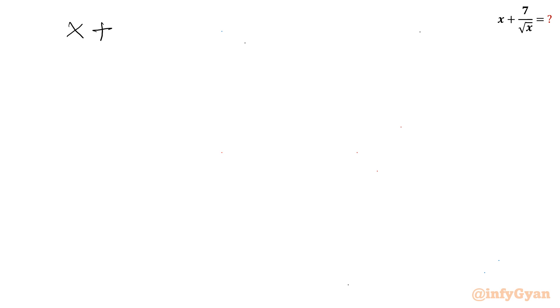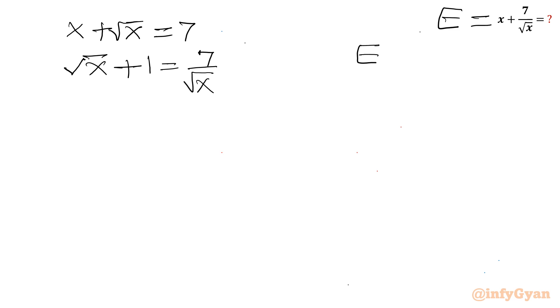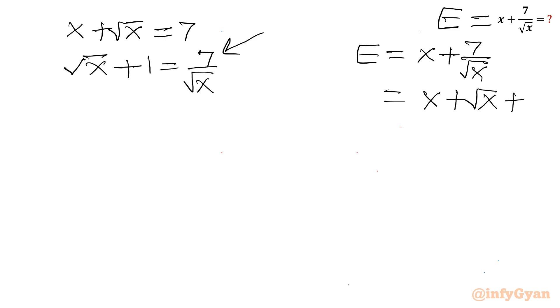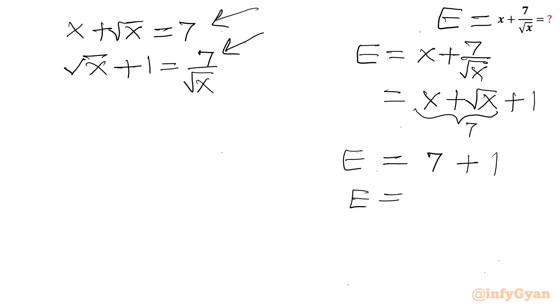Let's calculate the expression. e = x + 7/√x. From equation two, 7/√x = √x + 1, so e = x + √x + 1. From equation one, x + √x = 7, so e = 7 + 1 = 8. Our final answer is e = 8.